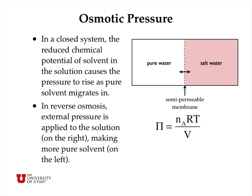In reverse osmosis, an external pressure is applied to the solution on the right and forces it through the membrane. As long as we apply a pressure greater than the osmotic pressure, we can actually generate pure water on the left. This is how reverse osmosis water purification devices work.